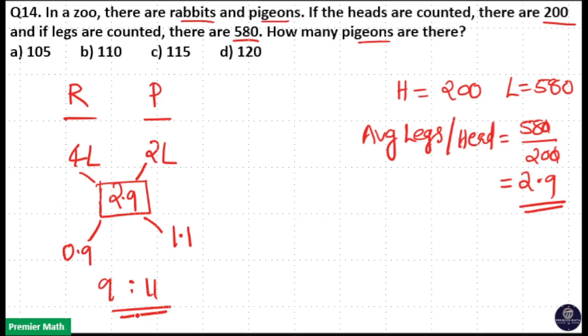That means 11 plus 9 is equal to 20. 20 parts is the number of heads, the total number of rabbits and pigeons. That means 200. So, 1 part is equal to 10.